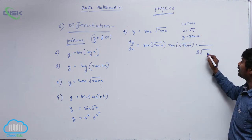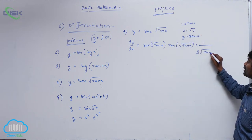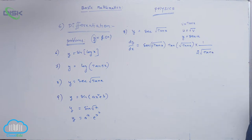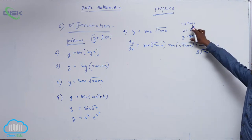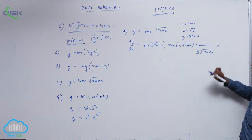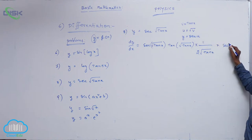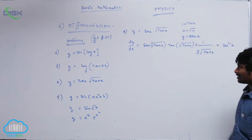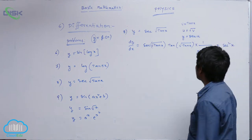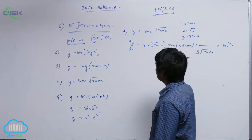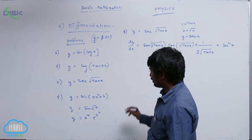But v is tan x. Again, v differentiation with respect to x: differentiation of tan x is secant square x. That is all — this is the answer for the eighth question.